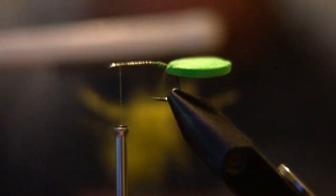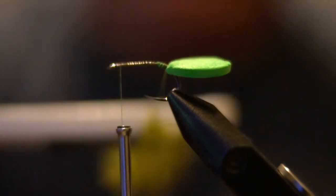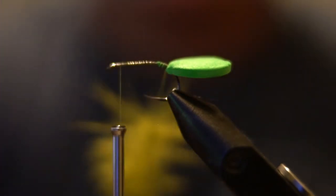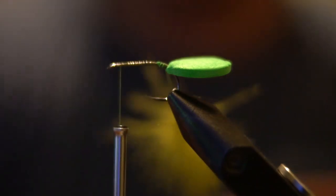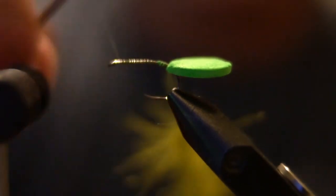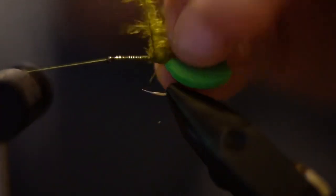Once it's twisted up I'll take my brush and just kind of brush out the fibers a little bit. Not completely necessary, but if you have a rotary vise it makes it a little easier to dub it up. After each wrap, start to stroke them back.